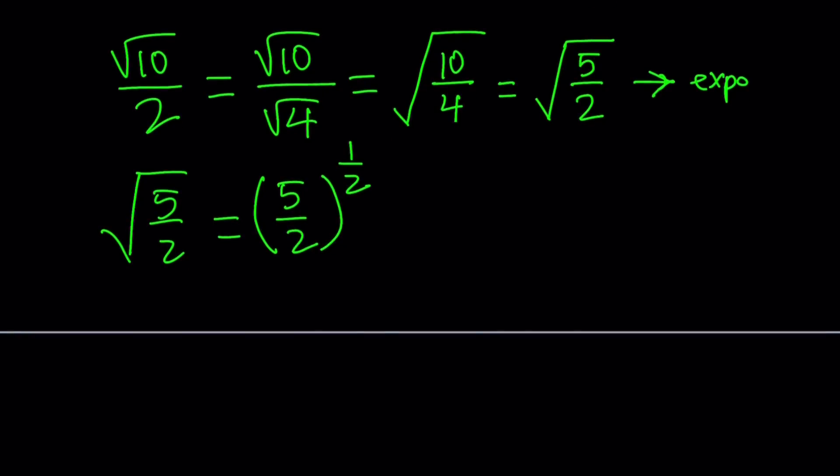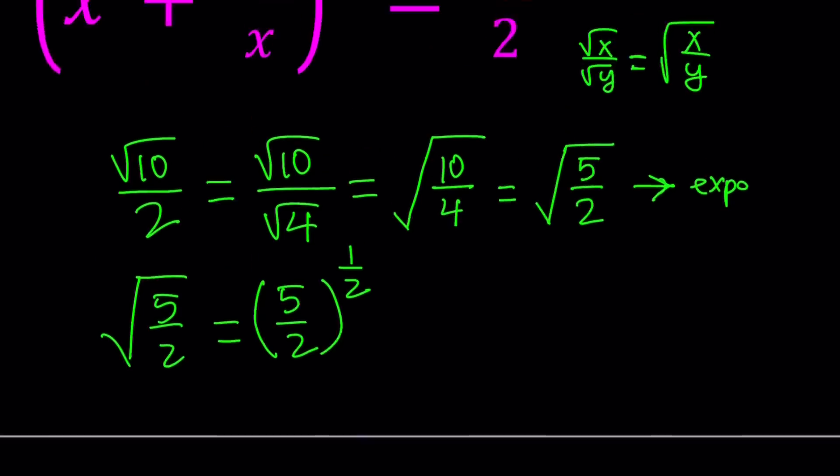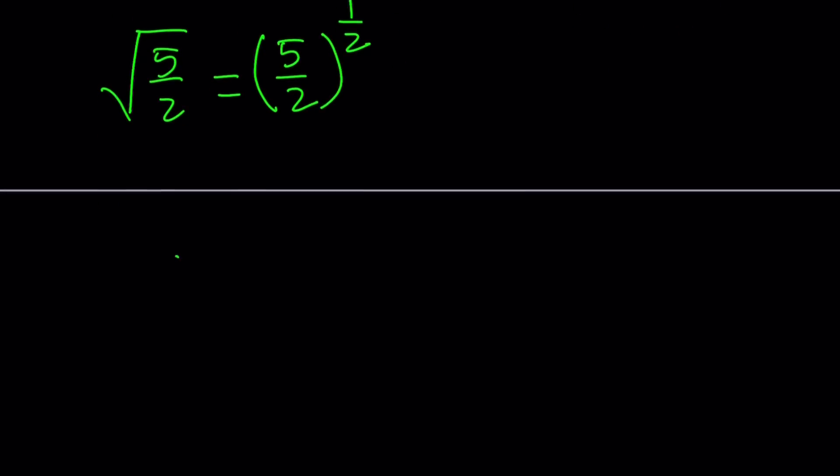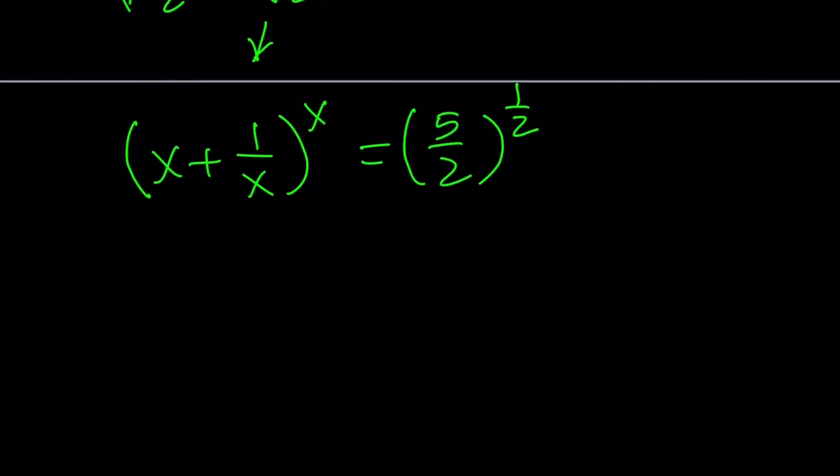So let's go ahead and set the original expression equal to this. So we have (x + 1/x)^x = (5/2)^(1/2). And did I tell you? I'm going to show you a graph at the end because you're probably curious about what the graph of this function looks like, right? Is it increasing? Is it decreasing? Does it have a maximum or a minimum and so on and so forth? And we can talk about that too.